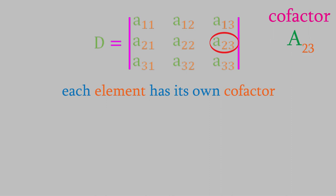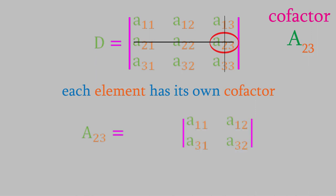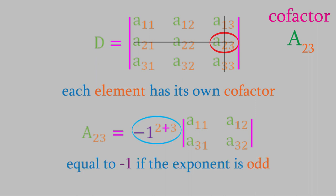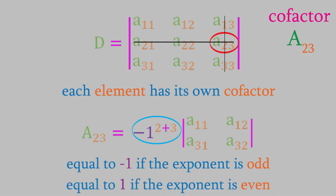Let's look at how a cofactor is calculated. For cofactor A23, we first mentally cross out the row and column that the element appears in. To calculate the cofactor, we imagine that the remaining elements are squeezed together to form a 2 by 2 determinant. The cofactor is equal to that determinant multiplied by negative 1 raised to the power of the row number and column number added together. This factor will always be negative 1 when the row and column add up to an odd number, and positive 1 if they add up to an even number.